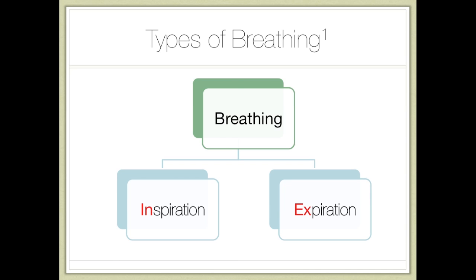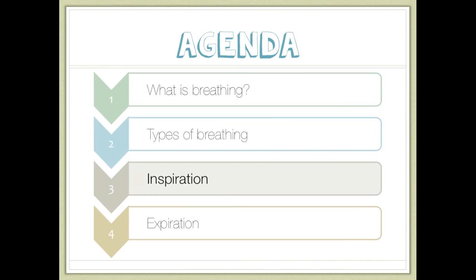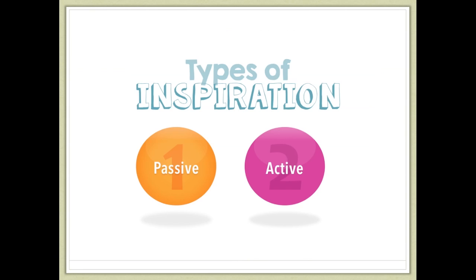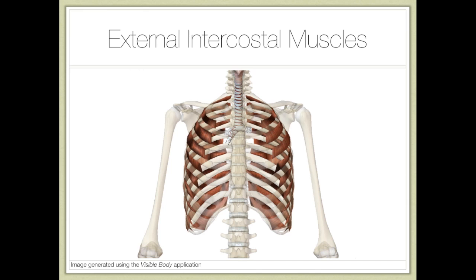We will begin by looking at the muscles involved in inspiration. Overall, there are two types of inspiration: passive and active. Passive inspiration requires no conscious effort, and we do this most of the time. In terms of the muscles involved, there are the external intercostal muscles.